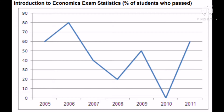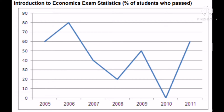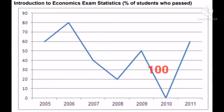We can also immediately determine what percent failed. In 2005, 60% passed so 40% failed. In 2006, 80% passed so 20% failed. In 2007, 40% passed so 60% failed. In 2008, 20% passed so 80% failed. In 2009, 50% passed so 50% failed. In 2010, 0% passed meaning 100% failed. In 2011, 60% passed and 40% failed. Those are the things you can immediately see from the graph.